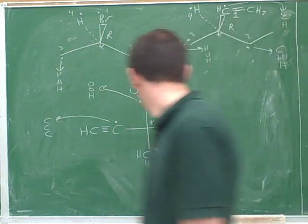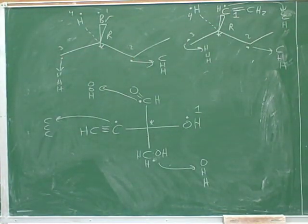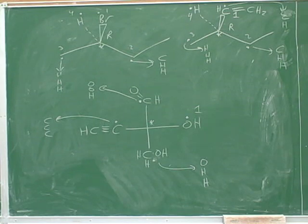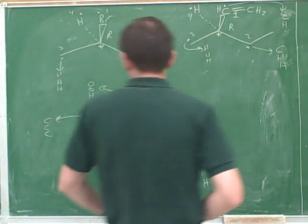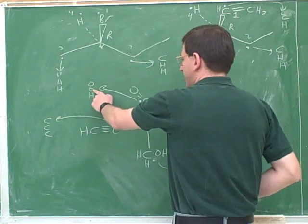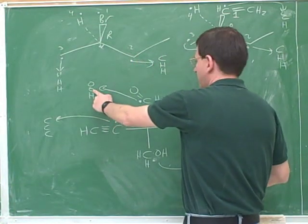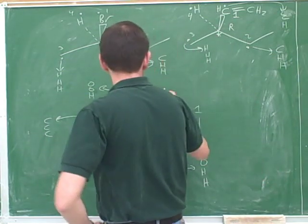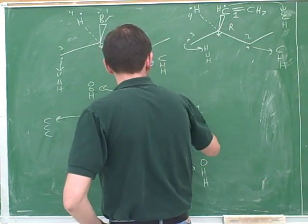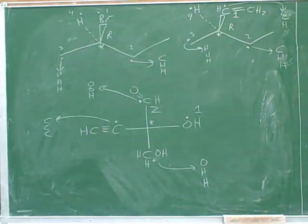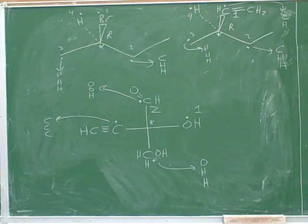We have a tie here, so we go to the second attachment, which makes this number two. This second oxygen beats this hydrogen down here, so this would be number two. And this oxygen beats this carbon, so this is three.